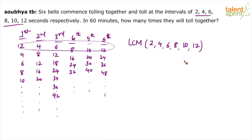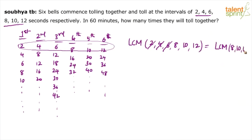When finding the LCM of a set of numbers, if a number is already a factor of another in the set, you can strike it off. Here, 2 is a factor of 4, 6, 8, 10 and 12 — so forget about 2. Similarly, 4 is a factor of 8, so 4 can be avoided. And 6 is a factor of 12, so 6 can be avoided. The LCM of 2, 4, 6, 8, 10 and 12 is the same as the LCM of 8, 10 and 12.